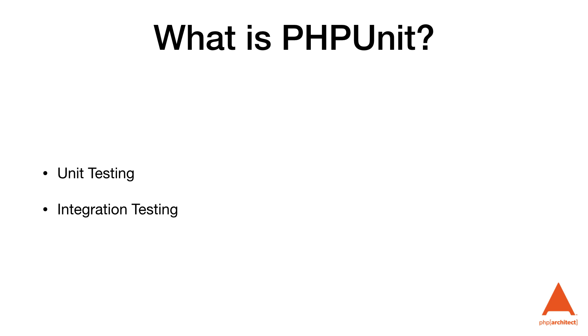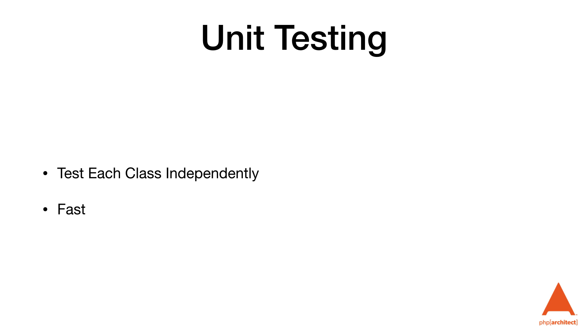PHPUnit can be used to do all kinds of testing, but the two main types we'll be discussing today are unit testing and integration testing. Unit testing is a testing method where individual units of source code are tested to determine whether or not they are fit for use. A unit test generally tests a single class so we can isolate side effects in our tests — that way a change in one class doesn't affect multiple tests.